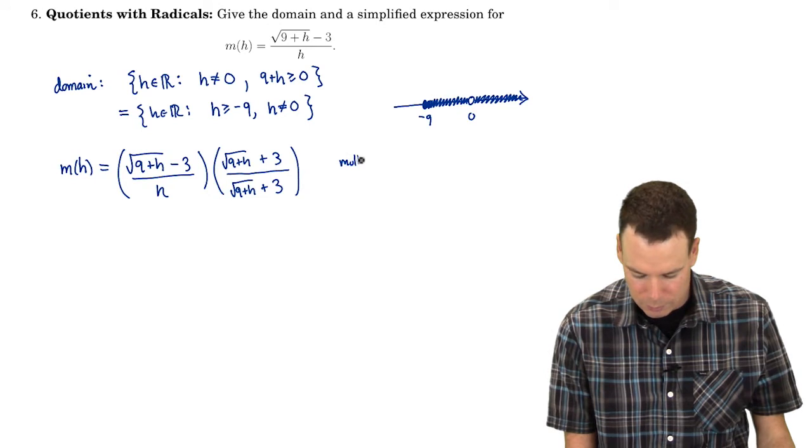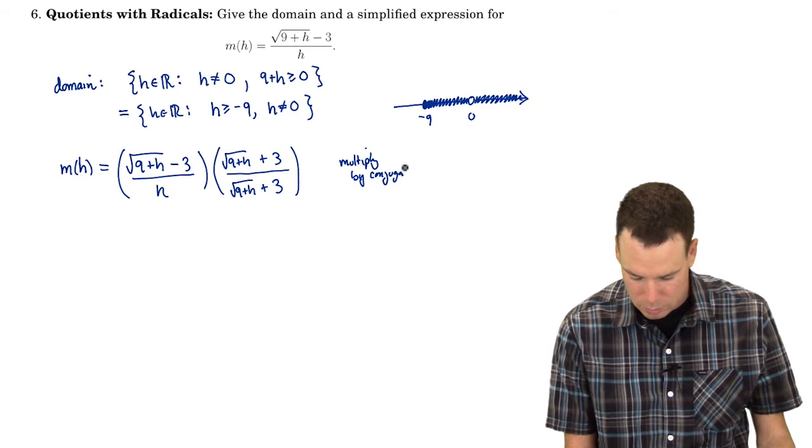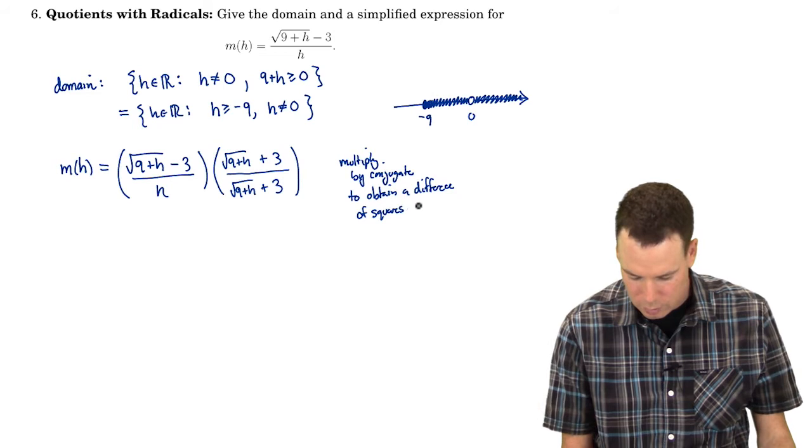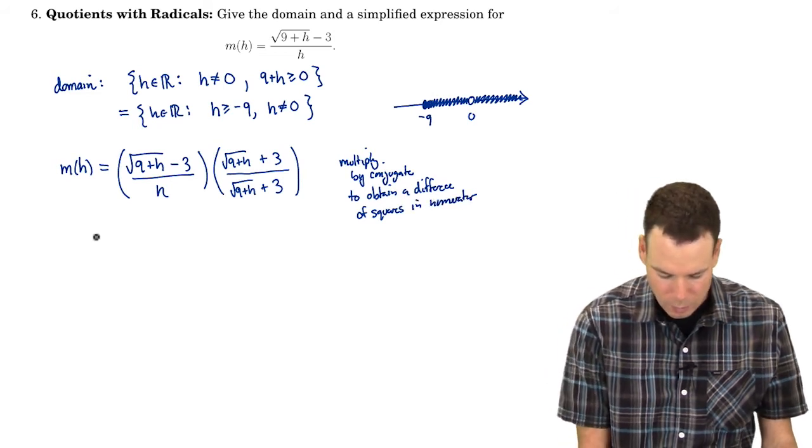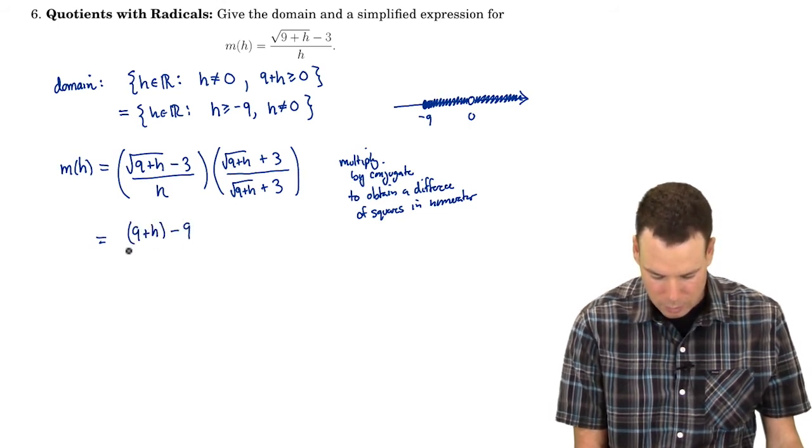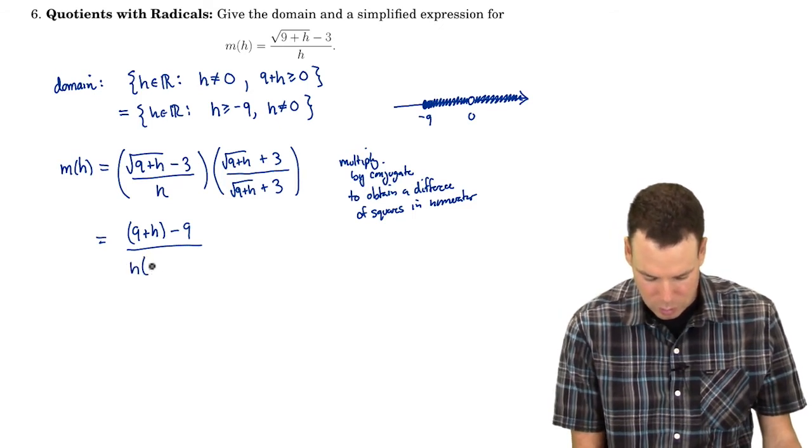So we multiply by a conjugate to obtain a difference of squares in the numerator. So that becomes a nine plus h minus nine. That's what happens when I expand out the top. The bottom is an h times the square root of nine plus h plus three.